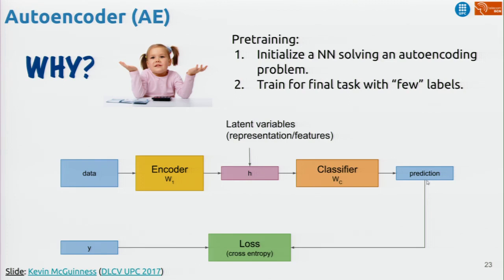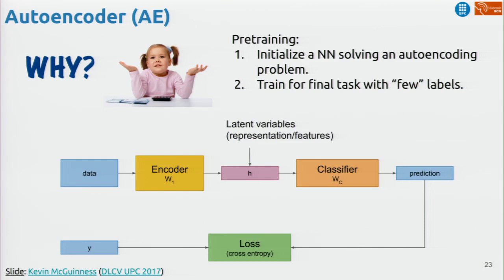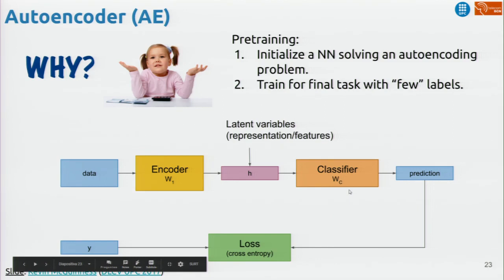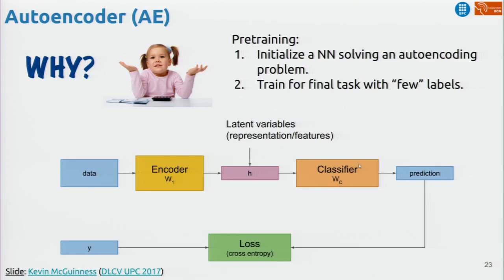We discard the decoder because we're not interested in reconstructing the input data — we already have it. That's only useful for estimating the parameters of the encoder. With this key representation, we add a classifier for image classification or whatever task we want. We could train these parameters, and in deep learning we can also allow these parameters to adjust to whatever task — we can freeze them or fine-tune them. So why would this approach be useful at all? Why not just learn the classifier directly?